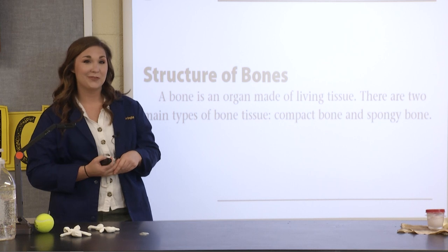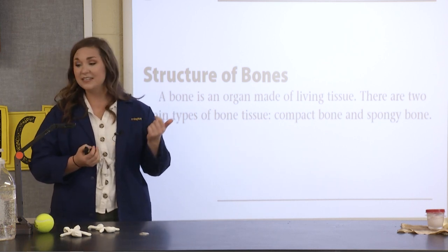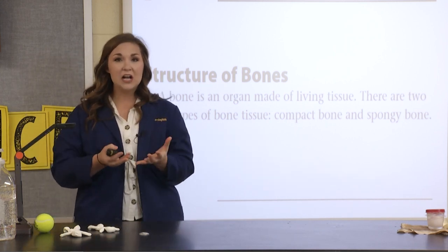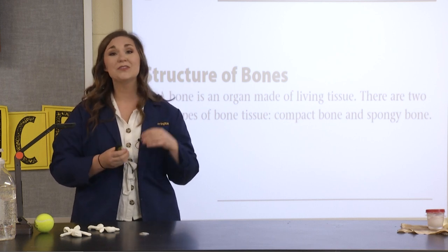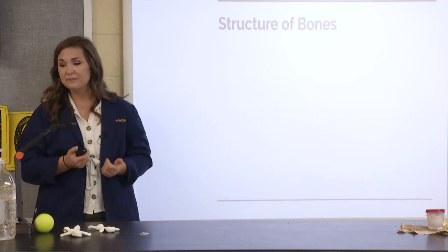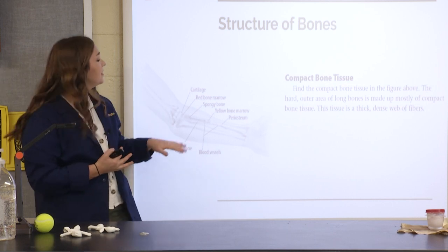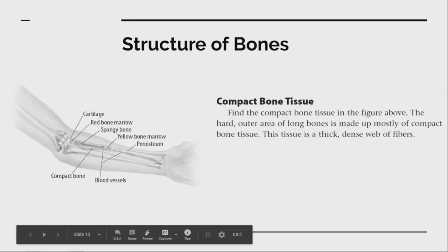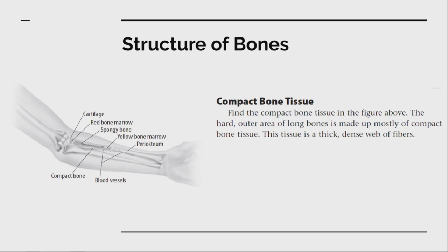Let's talk about the structure of bones. A bone is an organ made of living tissue. We've talked about how the smallest living thing is a cell, and a bunch of cells working together makes a tissue — bones are the perfect example of living tissue. There are two types: first, compact bone. Compact bone is found on the hard outer area of your long bones, like your arm or leg bone. It's really thick and dense, which helps with structure and support.